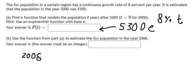Now we have 2008. We minus 2000 to find the value of T. That's 8.